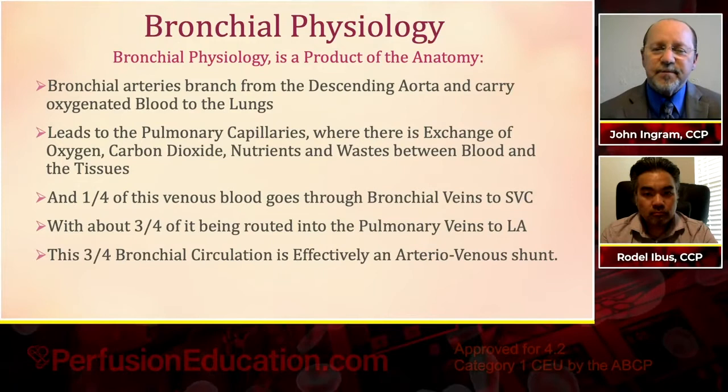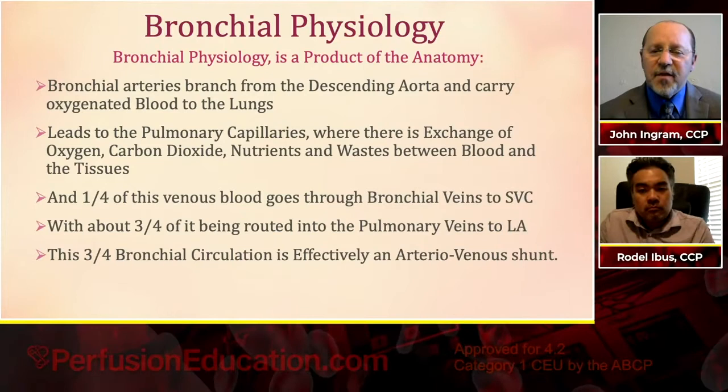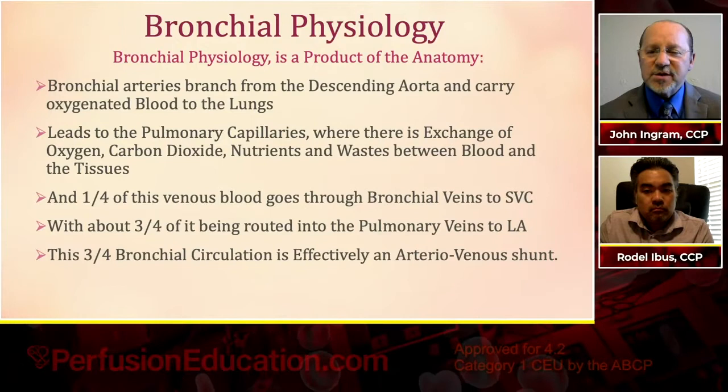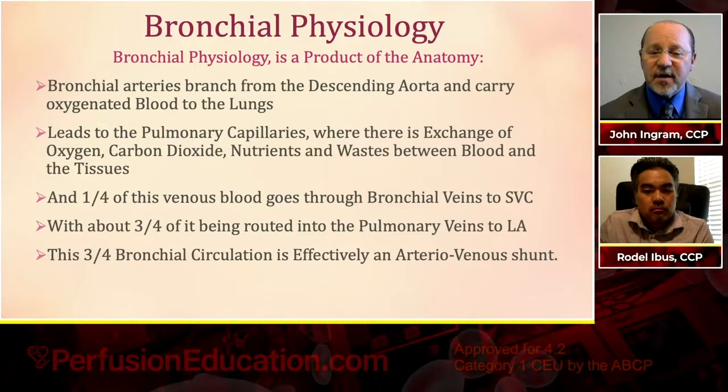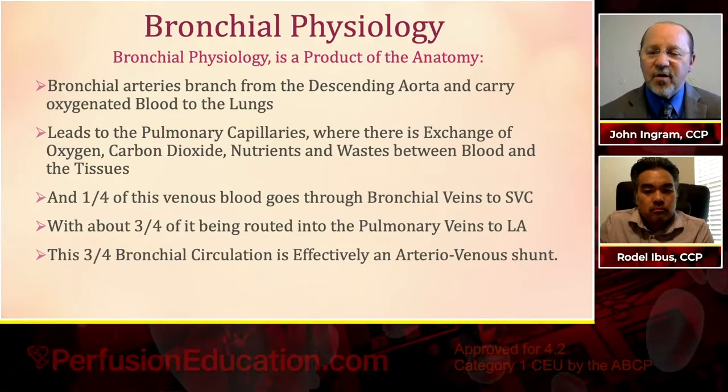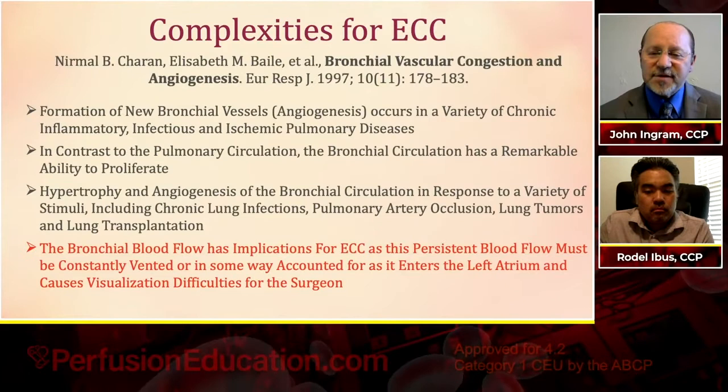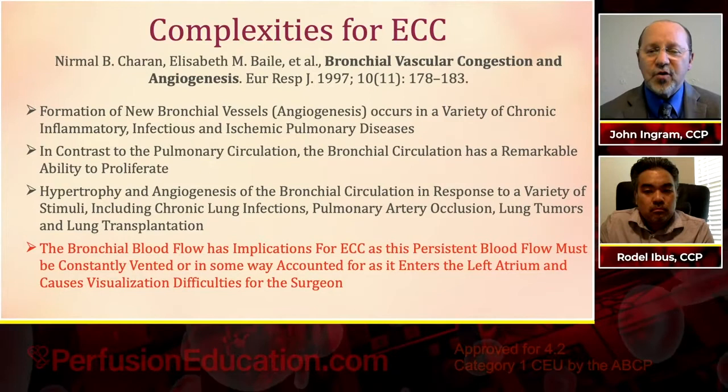Bronchial physiology summary: the bronchial arteries branch from the descending aorta and carry oxygenated blood to the lungs, leading to pulmonary capillaries where there's exchange of oxygen, carbon dioxide, and nutrients. One quarter of venous bronchial blood goes via bronchial veins to the superior vena cava; three quarters is routed to the pulmonary veins and left atrium. This three-quarter portion of bronchial circulation is effectively an arteriovenous shunt — going from the left side right back to itself via the left atrium.